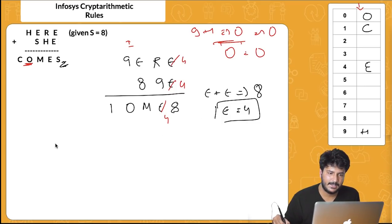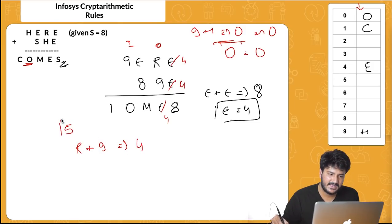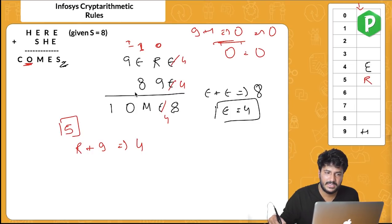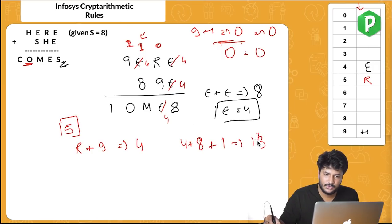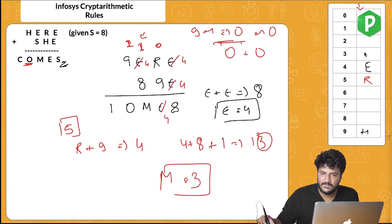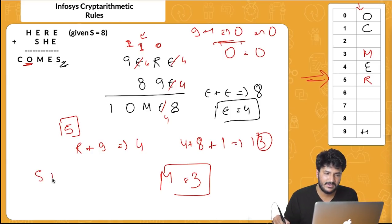In the next column: E plus E equals 8 (no carry in). So 2E = 8, meaning E=4. Next: E plus E equals 8 again, no carry generated. Then R plus 9 (H) equals 4 (E) in the next column — with a carry in, 5 plus 9 equals 14, giving digit 4 with carry 1. So R=5. Finally, 4 plus 8 (S) plus 1 carry equals 13, so M=3.